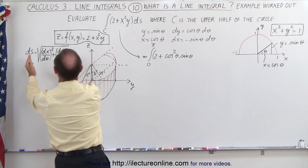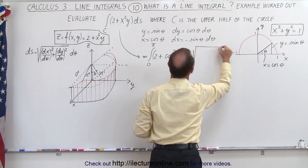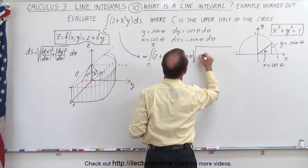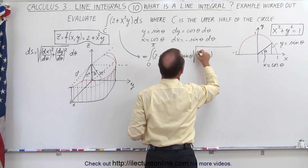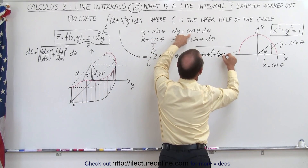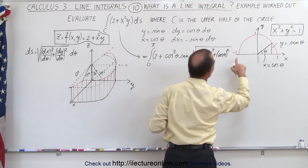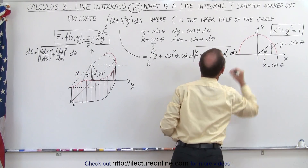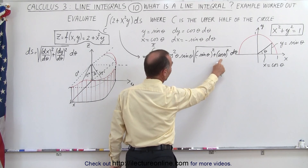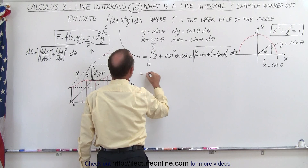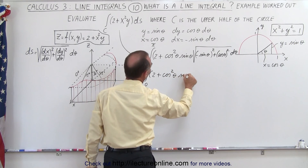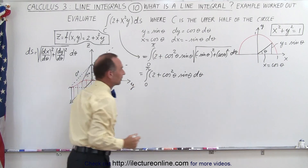Times ds. Now ds equals the square root of (dx/d-theta) squared plus (dy/d-theta) squared times d-theta. dx/d-theta is negative sine of theta, so we get negative sine theta squared; dy/d-theta is cosine of theta, so we get cosine theta squared. This gives sine squared theta plus cosine squared theta, which equals 1. So the integral simplifies to the integral from 0 to pi of (2 plus cosine squared theta times sine of theta) d-theta.